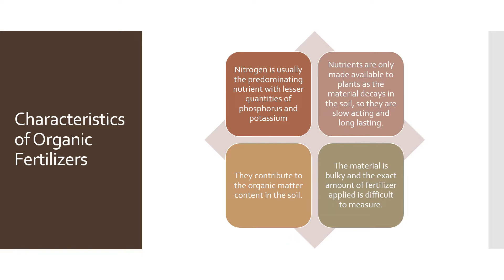Nitrogen nutrients are made available to plants as the material decays in the soil, so organic fertilizers are slow-acting and long-lasting. When organic compost is added to the soil, it doesn't break down quickly. Plants take a longer time to get the nutrients, but because it takes longer to break down, the nutrients are available over a longer period of time.